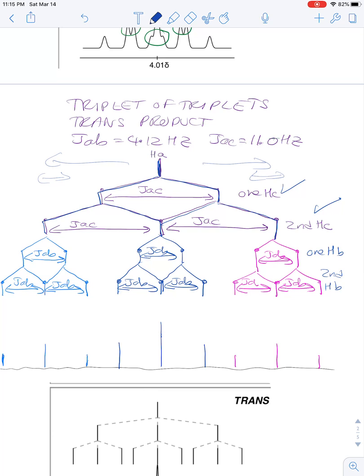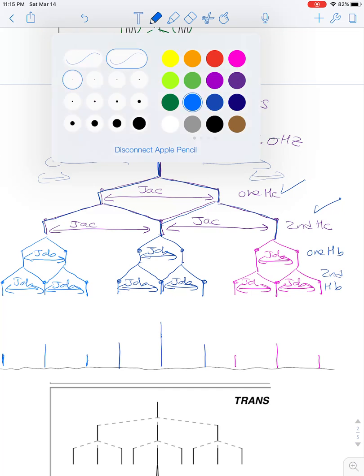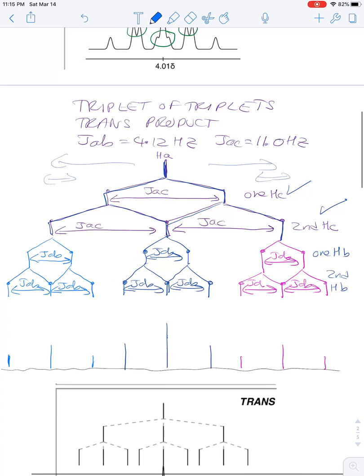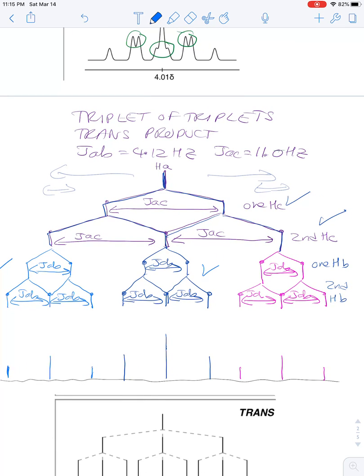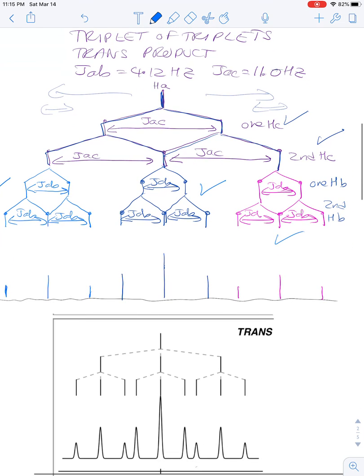Now we're going to take each element of the triplet, and we're going to split it further. These are smaller couplings. So there's the triplet imposed on the triplet for one, for the second one, and for the third one.